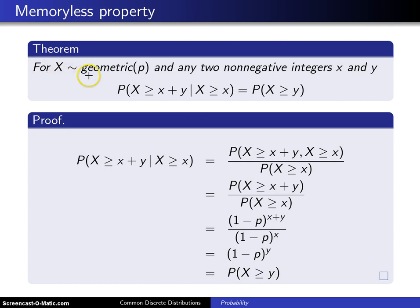If X has the geometric distribution with parameter p, where p is between 0 and 1, and any two non-negative integers x and y, then the probability X is greater than or equal to x plus y, given X is greater than or equal to x, is equal to the probability X is greater than or equal to y.